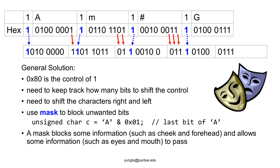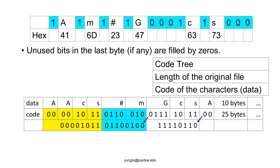What is a mask? A mask can block some information and allow some other information to pass through. Think of these 2 masks drawn here — they block the wearer's cheeks and foreheads, while allowing the eyes to see. The example here is a mask of hexadecimal 01. If we do bitwise AND with this mask, then all bits except the last bit will be set to 0. This mask blocks the first 7 bits and allows the last bit to go through. It is likely that the postorder description of the code tree has some unused bits in the last byte — if this occurs, the unused bits will be 0s. The second part of the header is the 4-byte integer storing the length of the file.